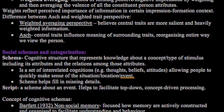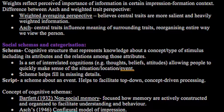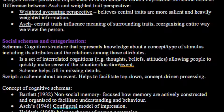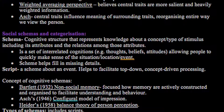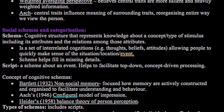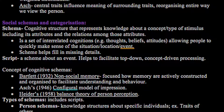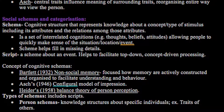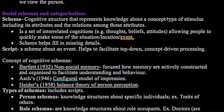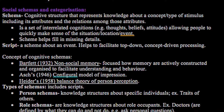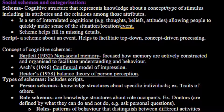Social schemas and categorisation: schemas are cognitive structures that represent knowledge about a concept or type of stimulus, including attributes and the relations among those attributes. They are a set of inter-related cognitions — thoughts, beliefs and attitudes — which allow people to quickly make sense of a situation, location or event. Schemas help fill in the gaps or missing details. Scripts are schemas for events and facilitate a top-down, concept-driven processing approach. The concept of cognitive schemas was founded by Bartlett in 1932 on non-social memory, focusing on how memories are actively constructed and organised to facilitate understanding and behaviour.